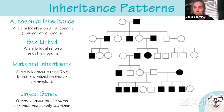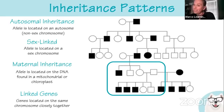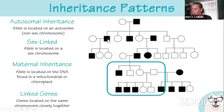From a pedigree, you need to figure out the type of inheritance. Shaded traits mean they have that trait; open circles or squares mean they don't. Squares are males, circles are females. If two unaffected parents have affected children, there's got to be a recessive trait — it can be masked or hidden. If the trait can skip generations, that tells you it's recessive. This particular pedigree shows autosomal recessive.